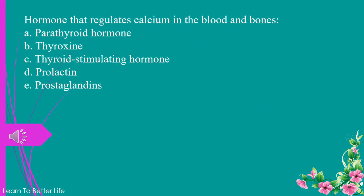Hormone that regulates calcium in the blood and bones. a. parathyroid hormone. b. thyroxine. c. thyroid-stimulating hormone. d. prolactin. e. prostaglandins. The answer is a. parathyroid hormone.